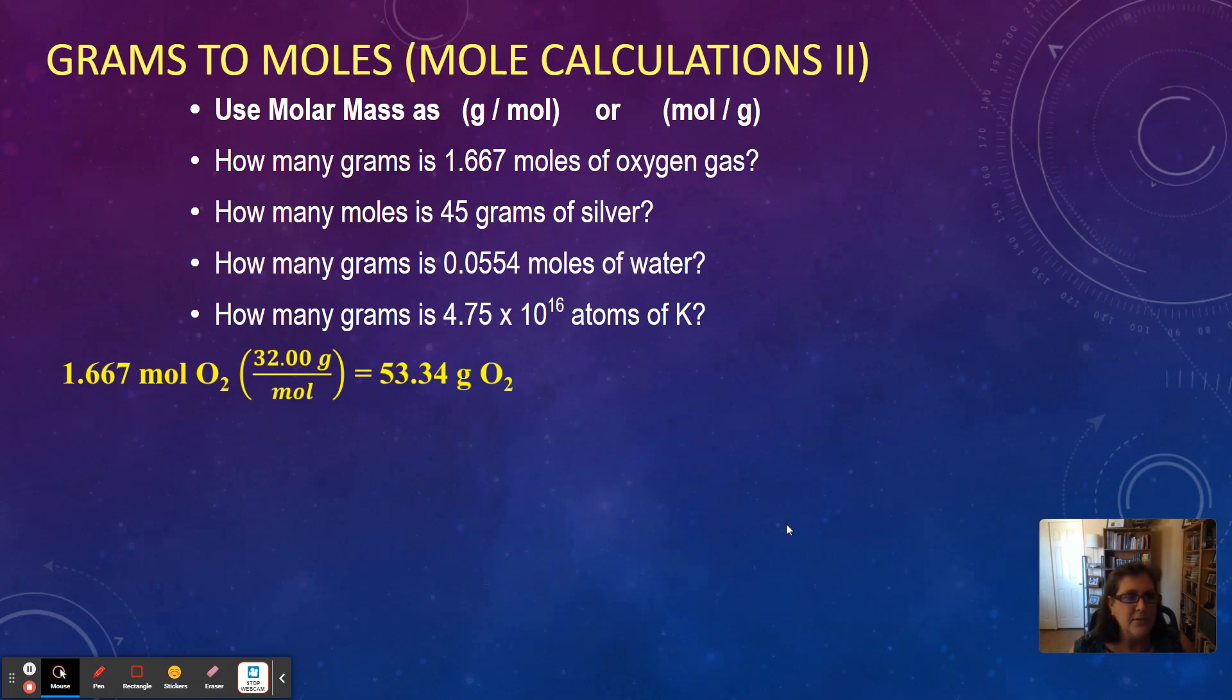There we go. Moles cancel out. We're left with grams. Is that what we wanted? How many grams? Yes. Okay. So 1.667 moles. Put it in your calculator. 1.667 times 32.00 divided by one. It's just one mole. Equals how many sig figs? Hmm. Everything has four. 1.667 has four. 32.00 has four. Remember, it's not 32. It's 32.00. Four sig figs. So we need four sig figs. 53.34 grams, O₂, is the final answer. So again, we're using the molar mass as a conversion factor.